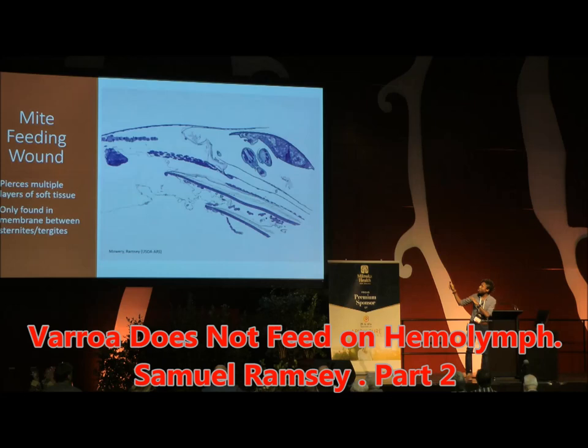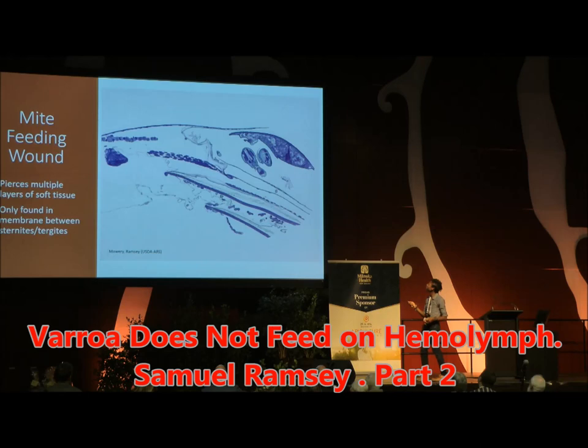So we undertook another set of microscopy. This is general light microscopy through thin sections of a bee that has a mite feeding on it, and you get to see something really fascinating here. I'm really glad that we did this for two reasons. Look very closely here — this is one of those plates, a sternite. This is Varroa destructor that was right in between those plates.